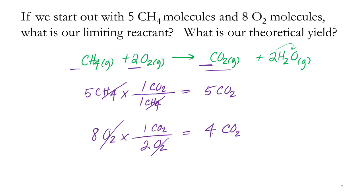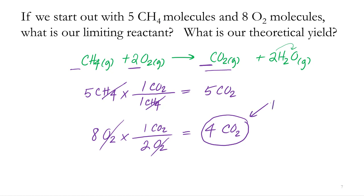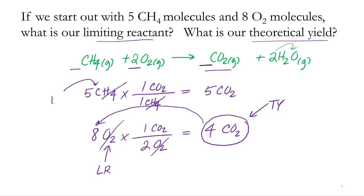By calculating how much product we can make for both reactants, it's saying I can make either four CO2s or five CO2s. How many can I actually make? I can actually only make four CO2s. Once I make four CO2s, I'm going to run out of oxygen — just like in the pizza example, once I make three pizzas I'm out of sauce. So four CO2 molecules is my theoretical yield. That tells me my limiting reactant: oxygen is my limiting reactant. CH4 is what we would call the excess reactant, so we've got leftovers of methane in this case.